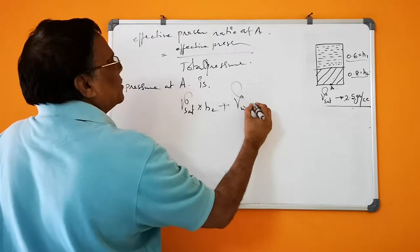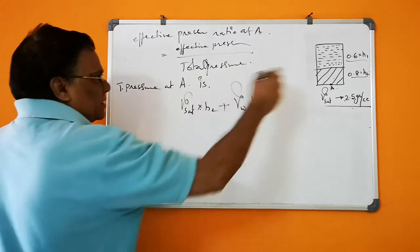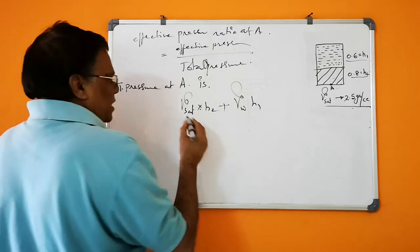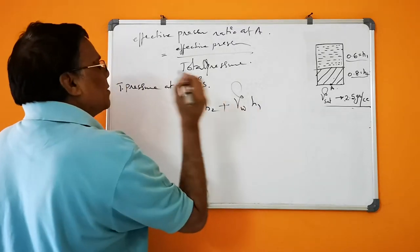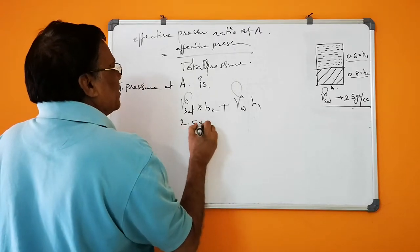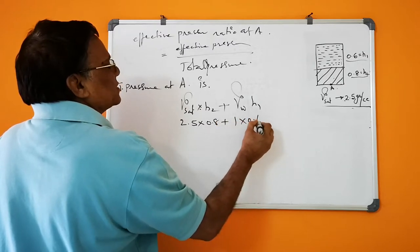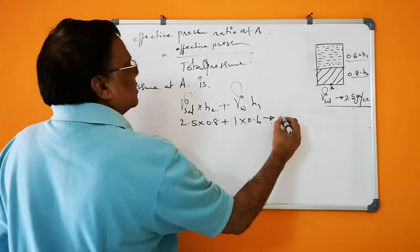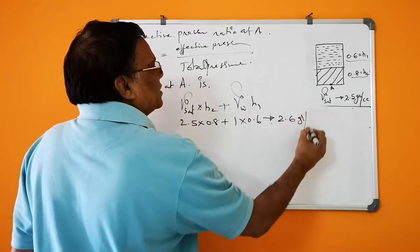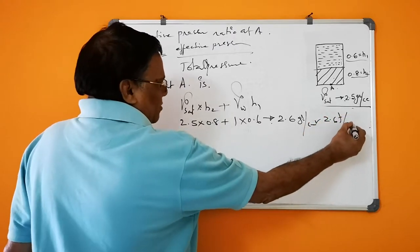So H2 is 0.8, H1 is 0.6, gamma sat is 2.5, gamma W is 1. This gives 2.5 times 0.8 plus 1 times 0.6, which is 2.6 grams per cc squared, or 2.6 tons per meter squared.